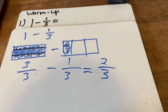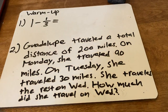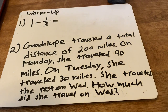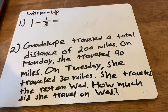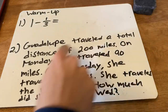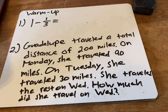Hopefully this isn't too hard and you got some practice on it yesterday. Now let's go ahead and do this word problem. Guadalupe traveled a total distance of 200 miles. On Monday she traveled 90 miles, on Tuesday 30 miles, and she traveled the rest on Wednesday. How much did she travel on Wednesday?